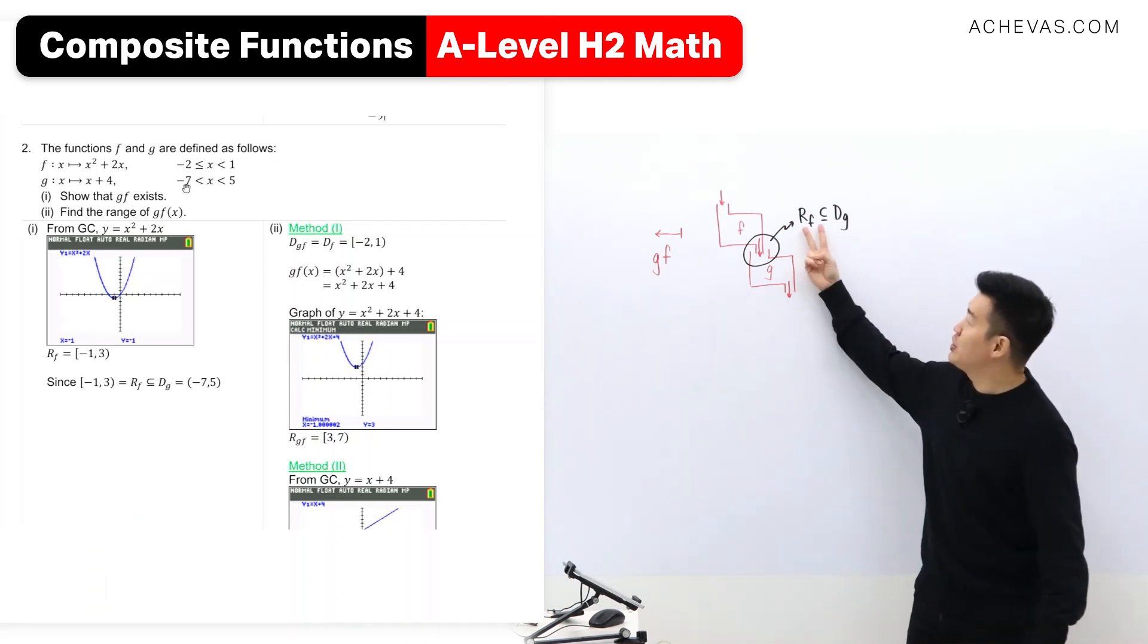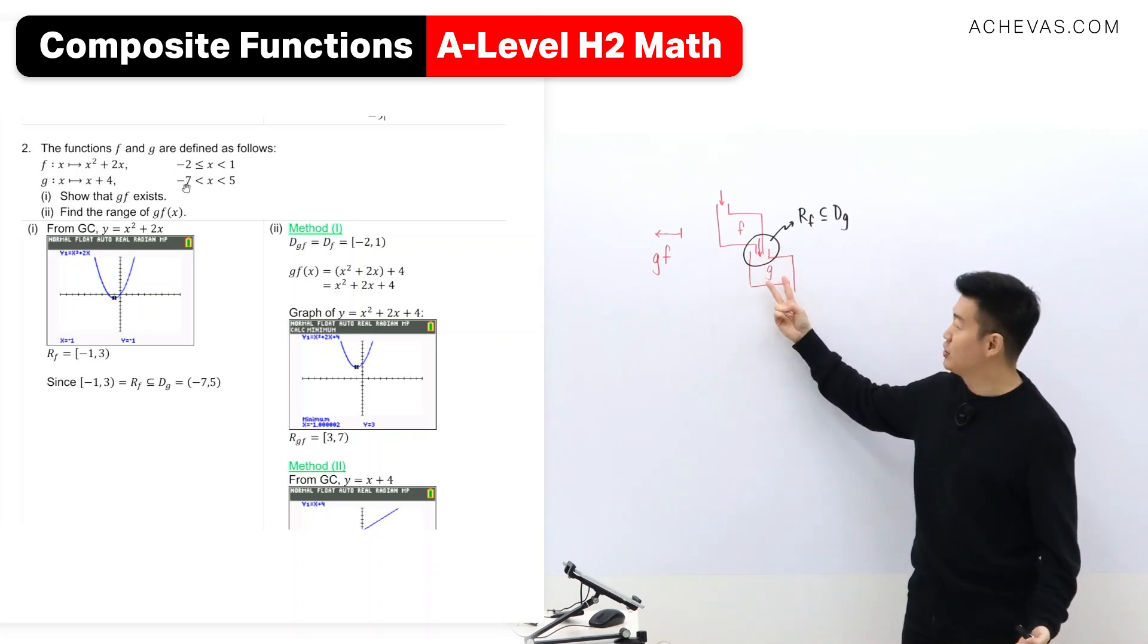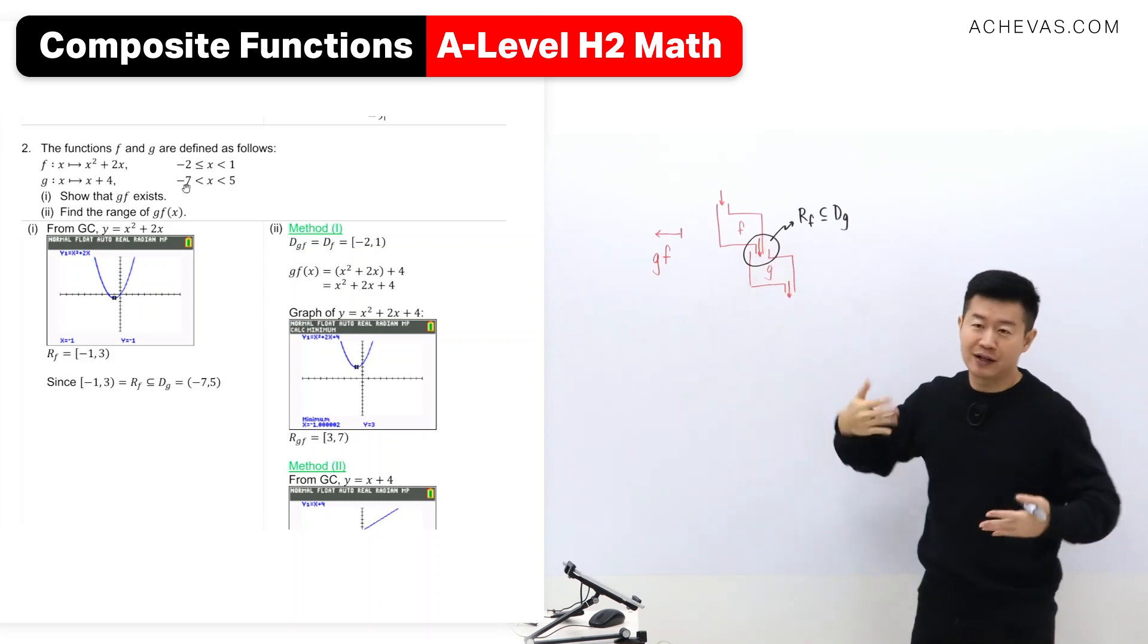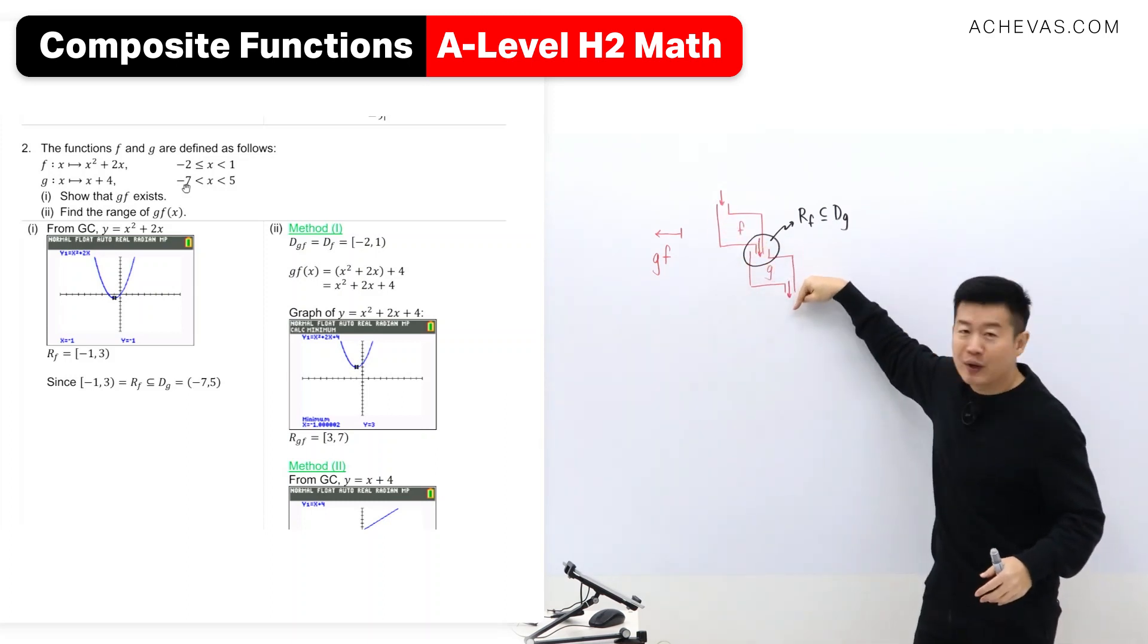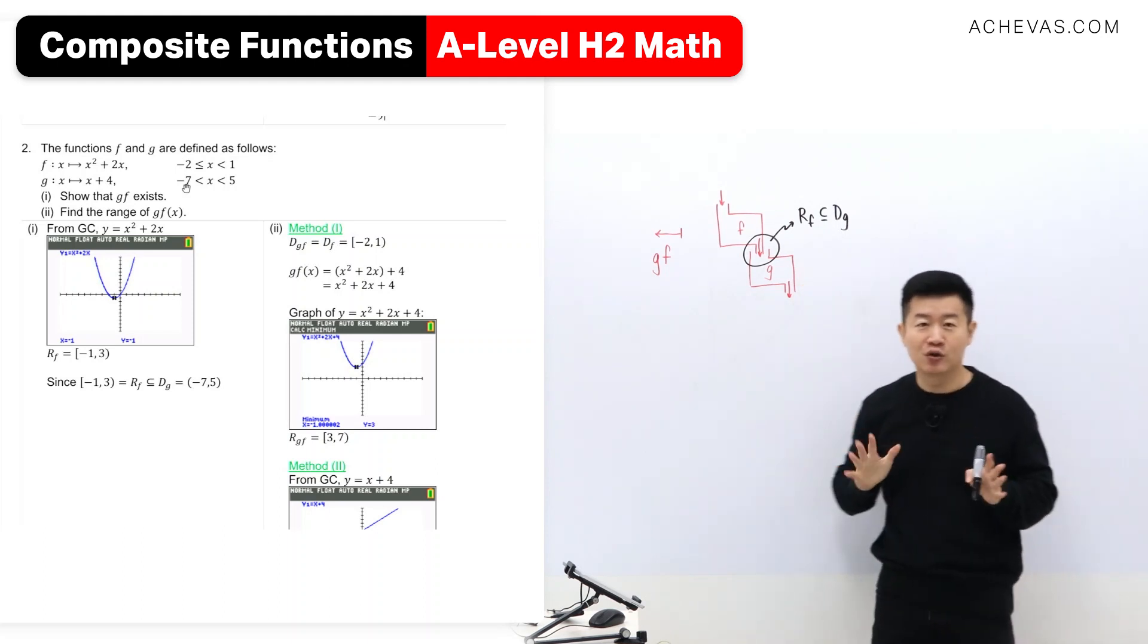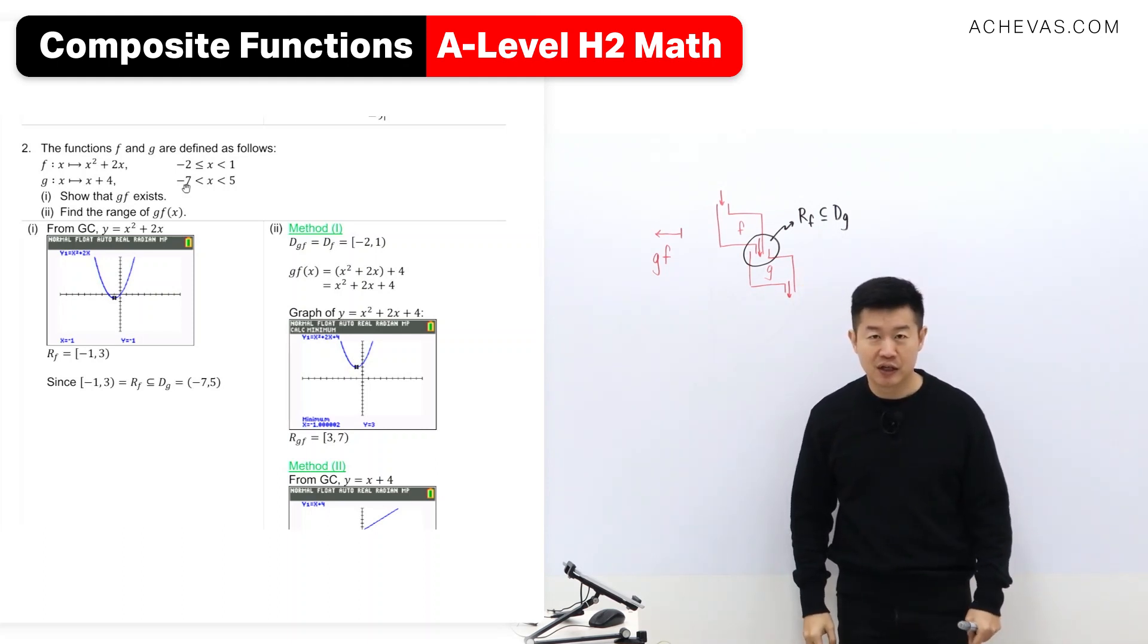What else can it be? I mean, if the range of F is more than the domain of G, then some things that come out from F are going to flow out. It's not going to continue all the way until the end. This is not going to form a composite function. Is this clear? Any question?